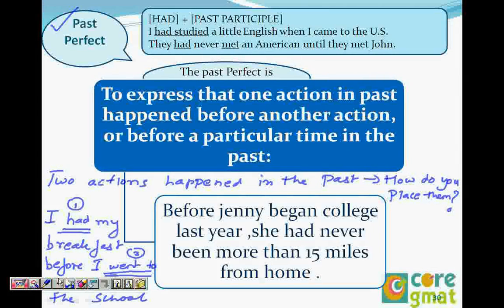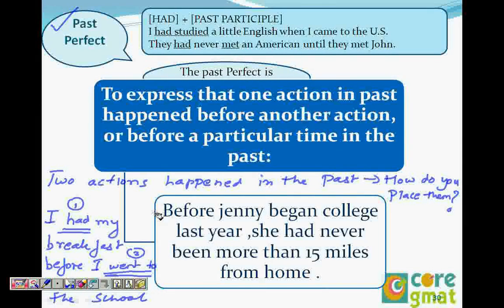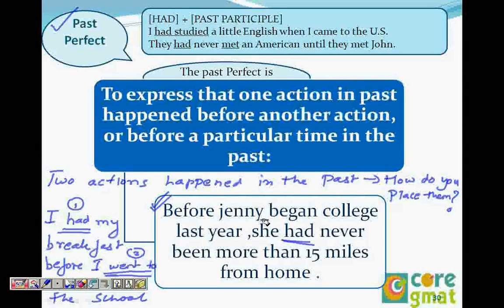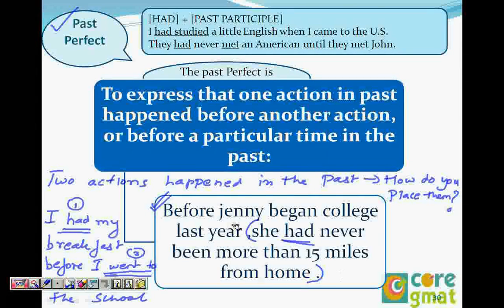So if you read this sentence: 'Before Jenny began college last year, she had never been more than 15 miles from home.' Which one is the first action? It should be 'she had never been.' You locate 'had' and it automatically tells you. This is where GMAT comes into the role — they give you the chronology of the actions and you have to place them in the correct time.